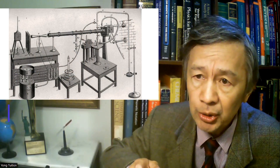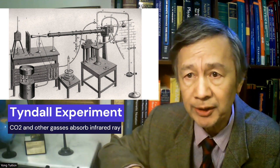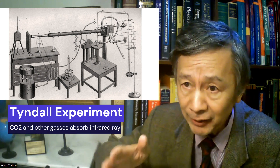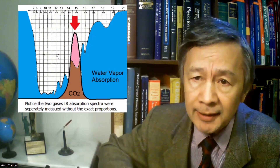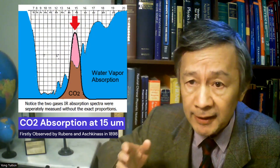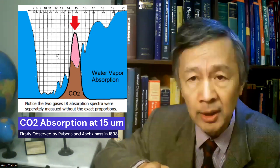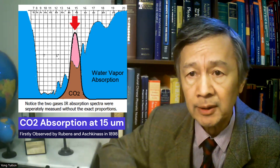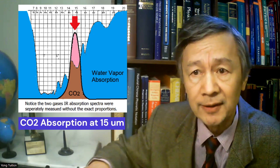In 1860, Tyndall experimentally found CO2 and many other gases can absorb infrared radiation from a metal box called a Leslie box, filled with boiling water. In 1898, the CO2 absorption centered at 15 microns was first observed by Rubens and Aschkinass, as I discussed several times.